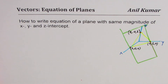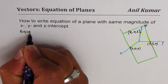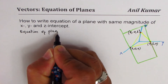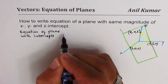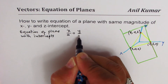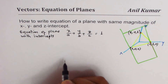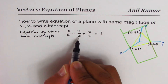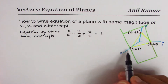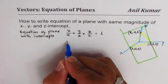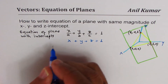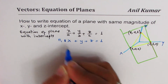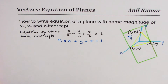Now, some of you may know the equation of a plane with intercepts. For them this question is very simple — it is x/a + y/b + z/c = 1. Since the magnitudes a, b, c of the x, y, and z intercepts are all equal to one, the answer for us will be x + y + z = 1. That is the equation of the plane; we can call this plane π₁.